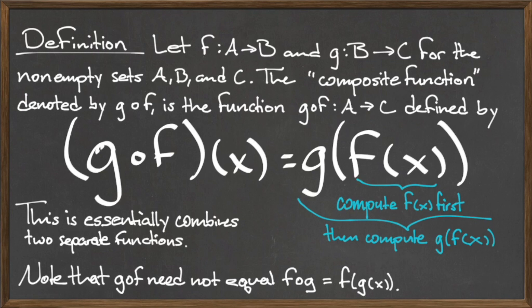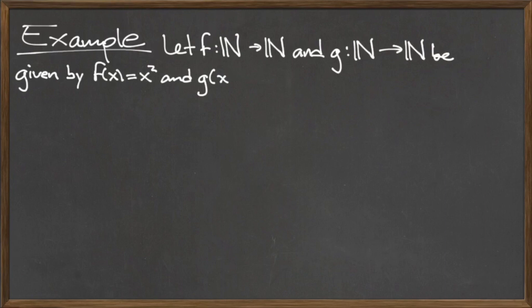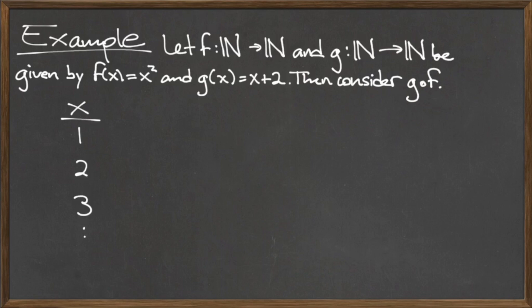Let's illustrate function composition with a mathematical example. Let f be a function from the natural numbers to the natural numbers given by f of x equals x squared, and let g be a function from the natural numbers to the natural numbers given by g of x is equal to x plus 2. Since the domain and codomains for both f and g are the natural numbers, we know that this composition is valid. Since we're trying to compute g compose f, we first need to compute f of x, and then plug that result into g to get the composition.